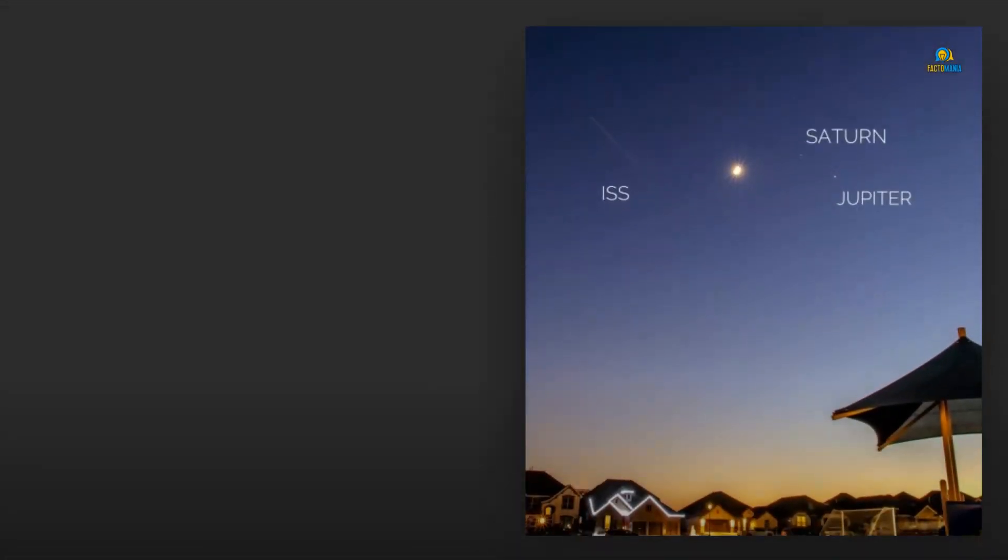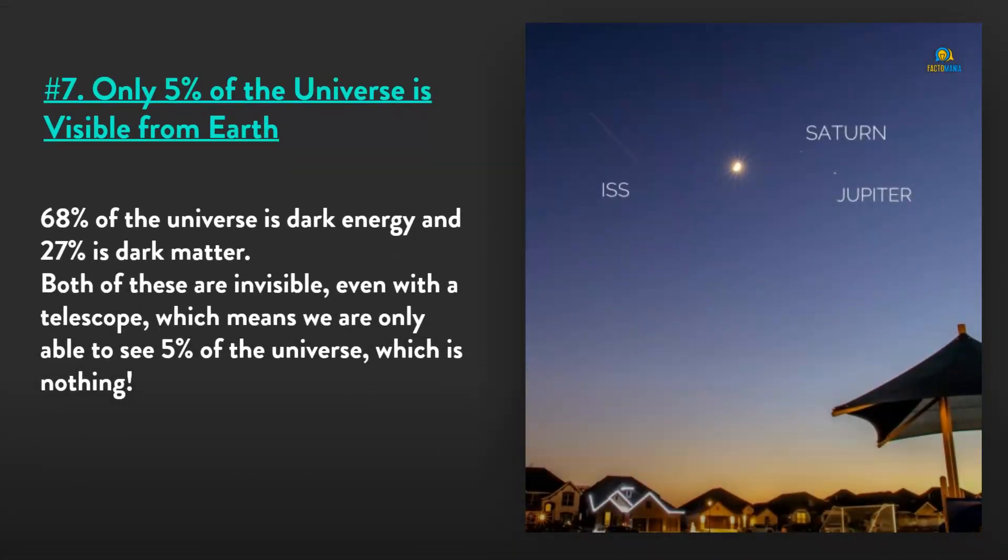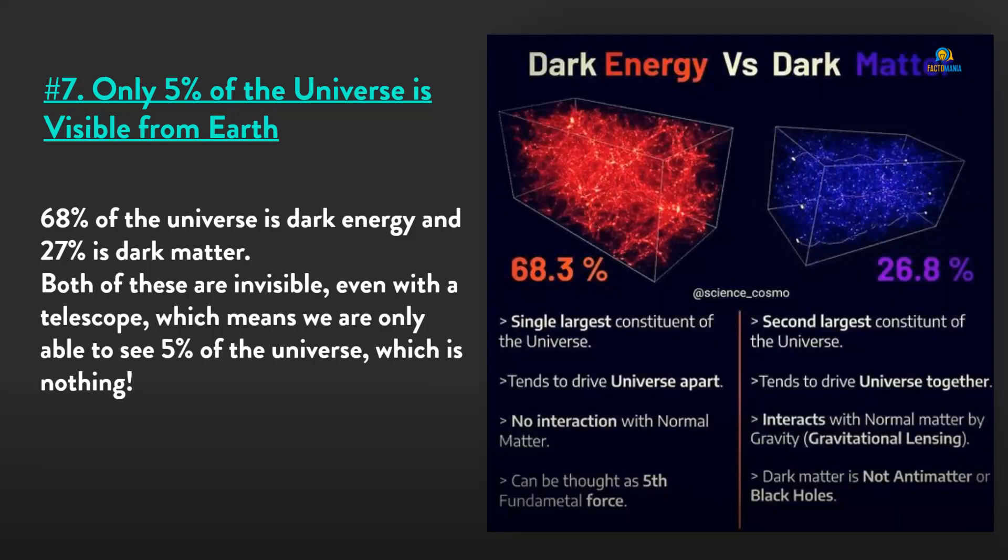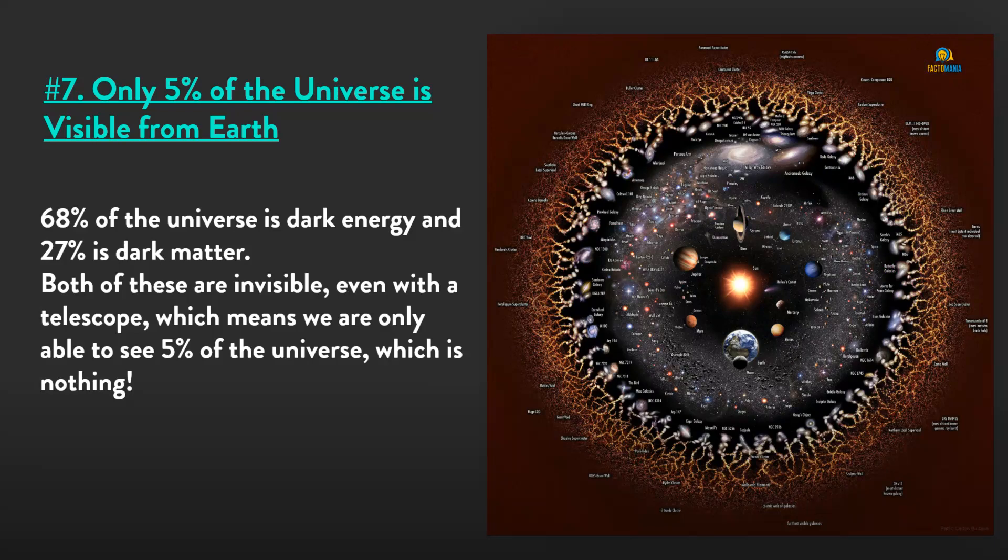Number 7: Only 5% of the universe is visible from Earth. 68% of the universe is dark energy and 27% is dark matter. Both of these are invisible, even with a telescope, which means we are only able to see 5% of the universe—which is nothing.